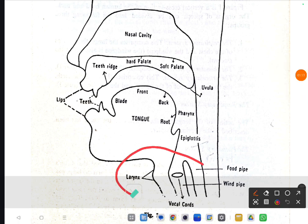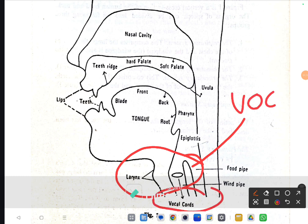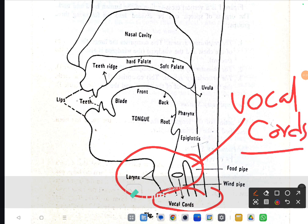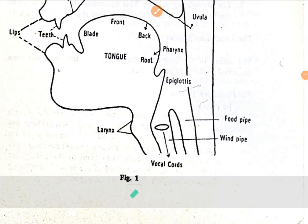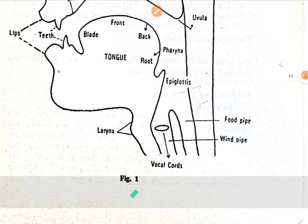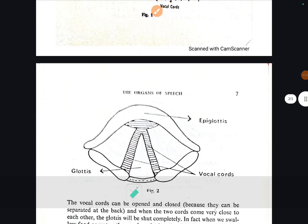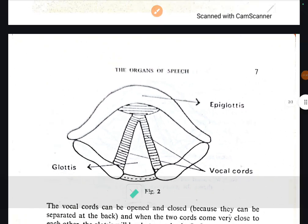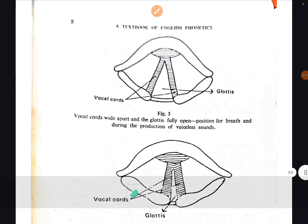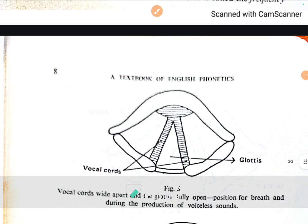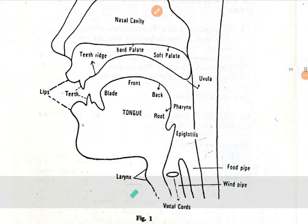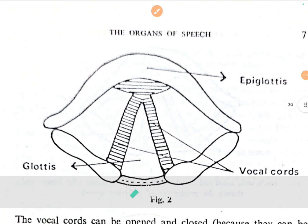That important organ inside the larynx is called vocal cords. Remember this — vocal cords. So what happens in this phonatory system: when we generally breathe in and breathe out, these vocal cords become open. But when we speak, sometimes these vocal cords are wide open.